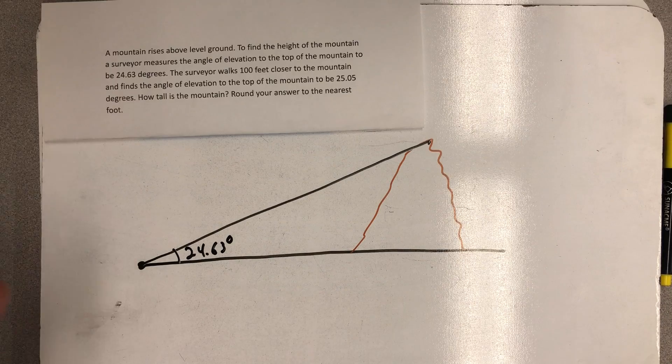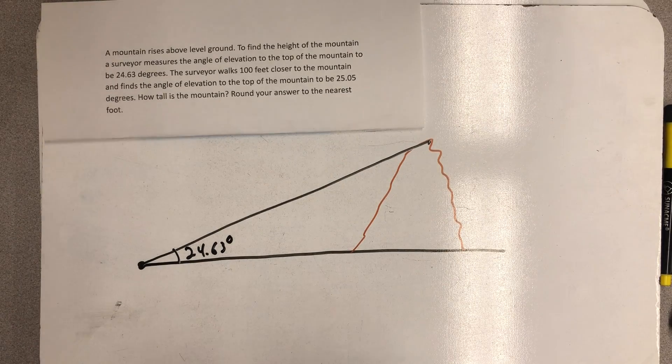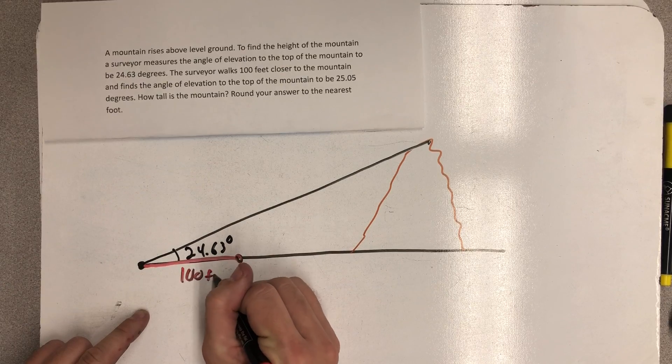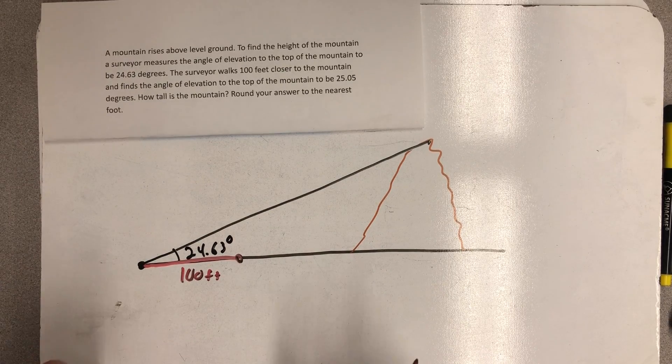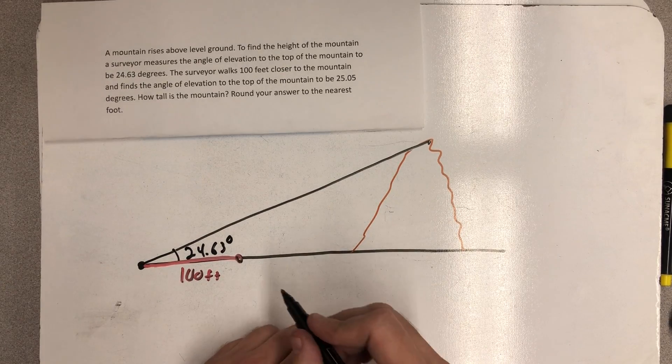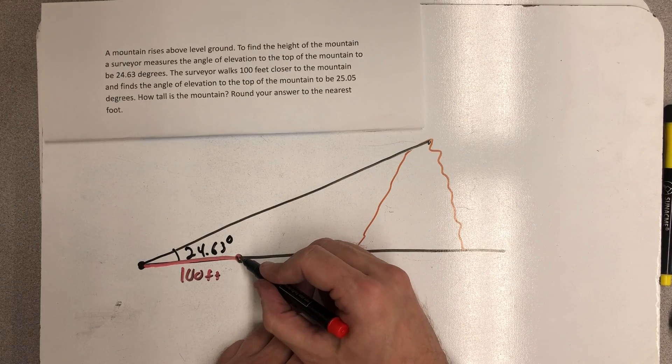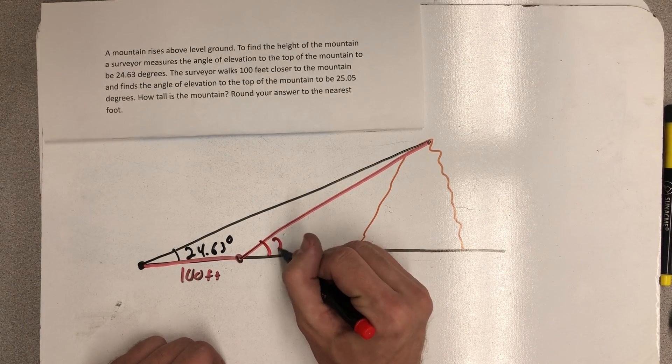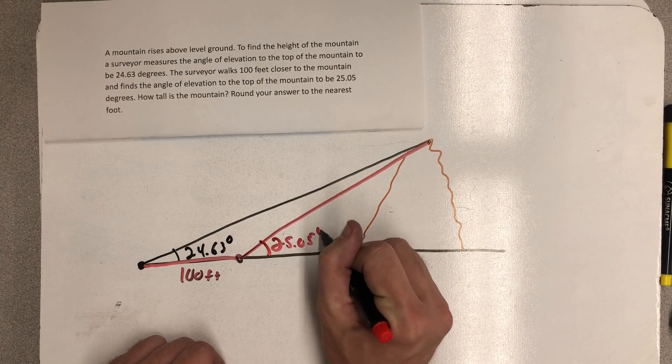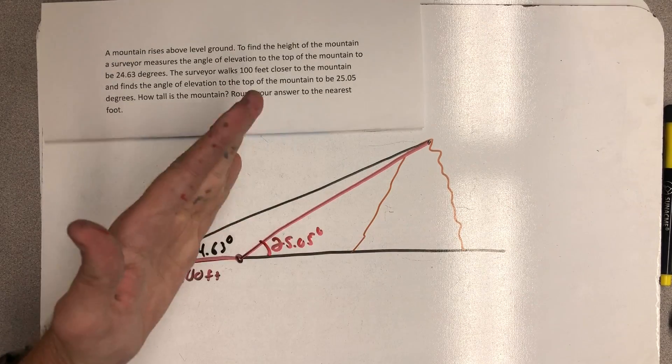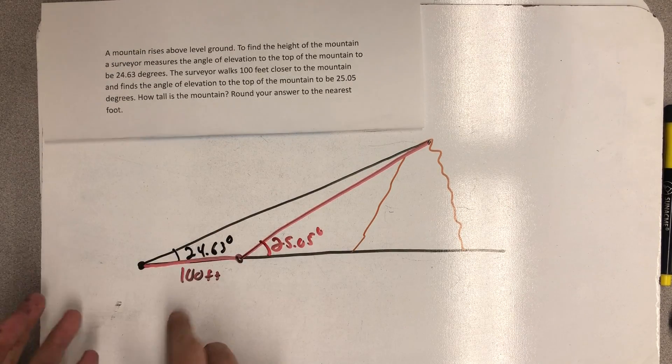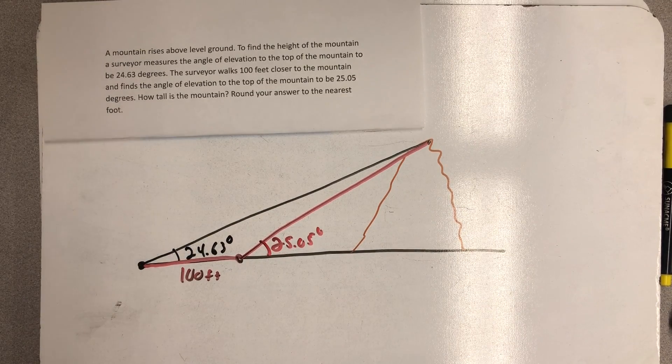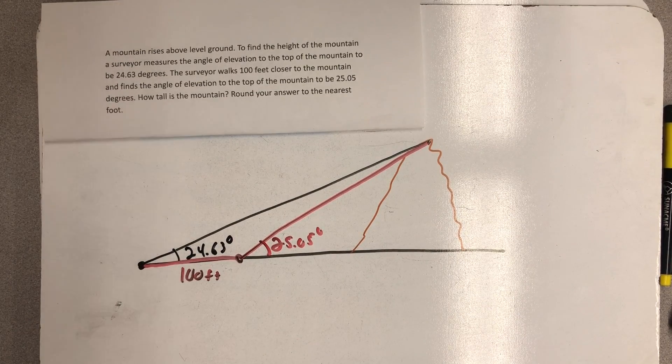The surveyor then walks 100 feet closer to the mountain and measures the angle of elevation again to be 25.05 degrees. So this picture is definitely not to scale because these angles are way too different to be 25 and a little smaller, a little larger than 25 respectively, but it'll work for our purposes.